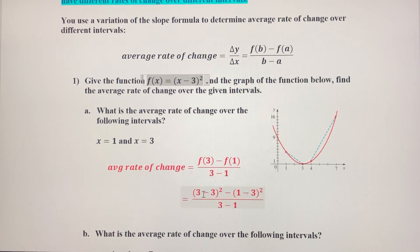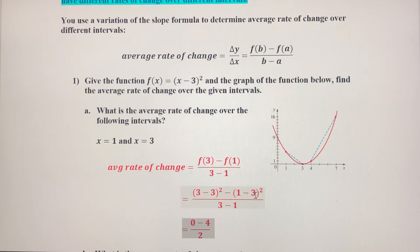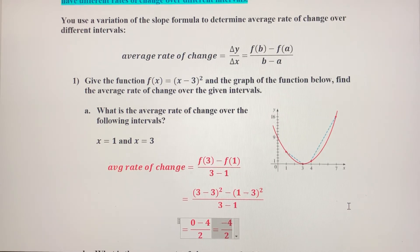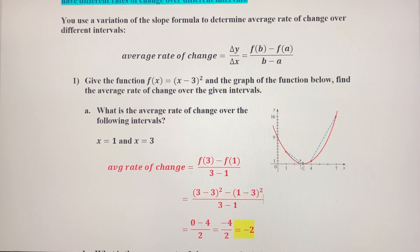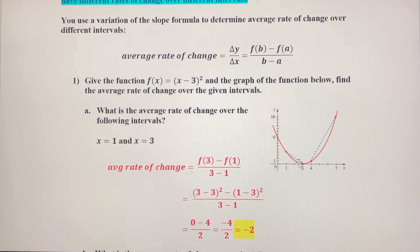Let's clean this up. In the numerator, we've got 3 minus 3, which is 0, and 0 squared is 0. Then 1 minus 3 is negative 2, and negative 2 squared is 4, but we bring down the minus sign, so that's minus 4. In the denominator, 3 minus 1 is 2. So that gives us negative 4 over 2, which is an average rate of change of negative 2. That should make sense — notice from left to right the function is decreasing from 1 to 3, so the rate of change has to be negative.